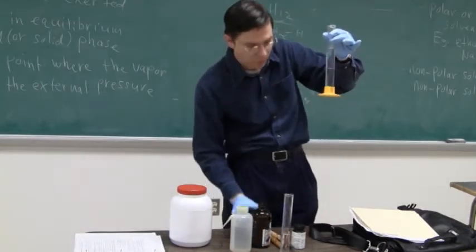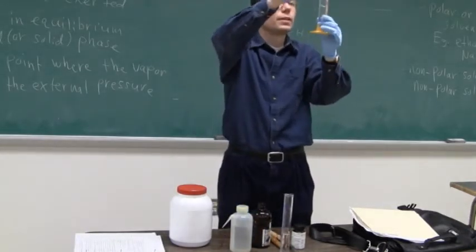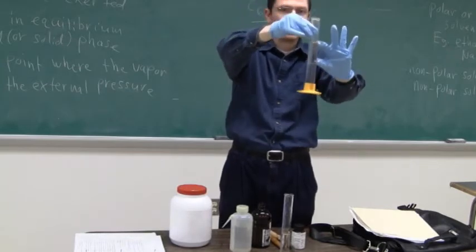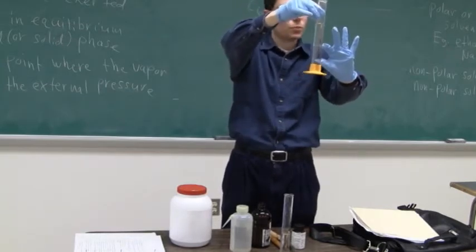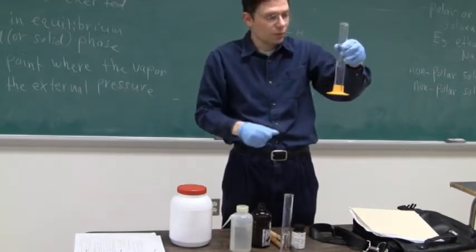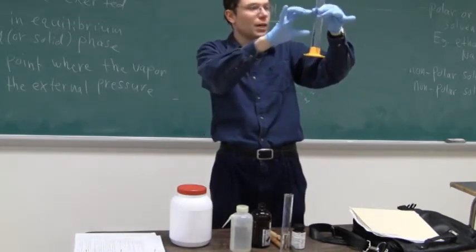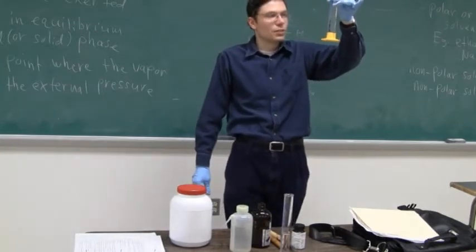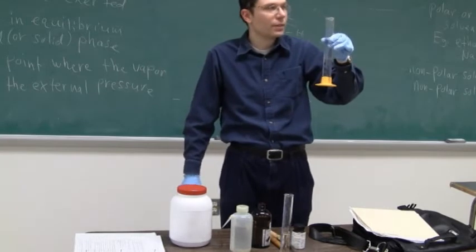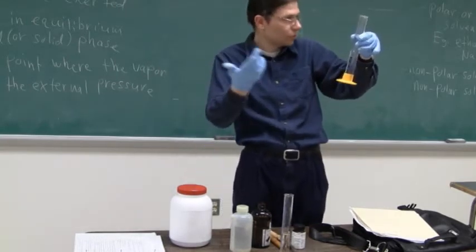Alright, so we have two layers here. You can see there's one here, put it down low so the camera can pick it up, and there's one here. So the cyclohexane actually is on top. And just as a side note, there's a reason why the cyclohexane is on top and the water is on the bottom. Does anyone know why the cyclohexane is on top? Yeah, actually. Less dense. Less dense, that's right.